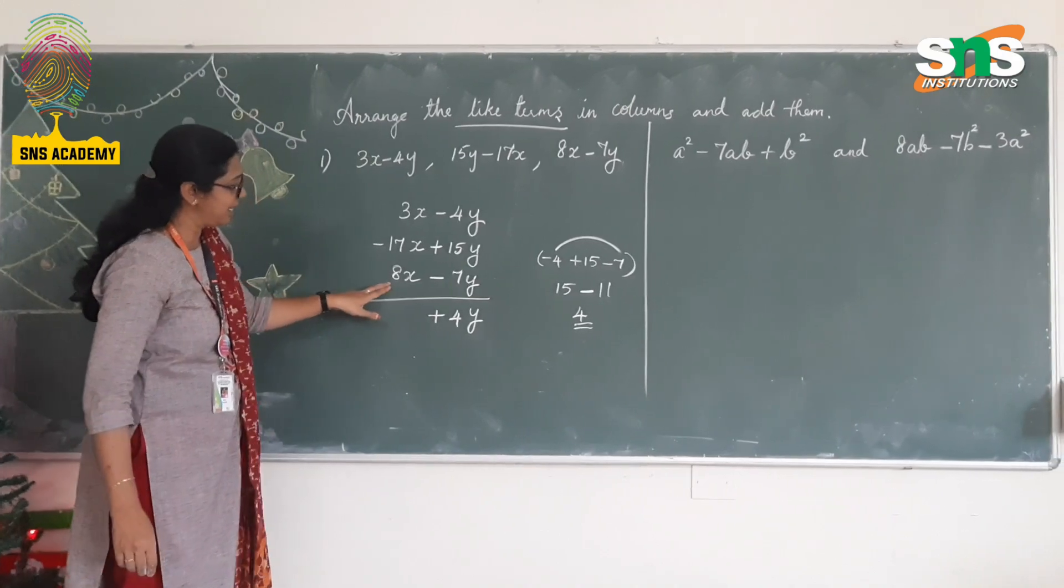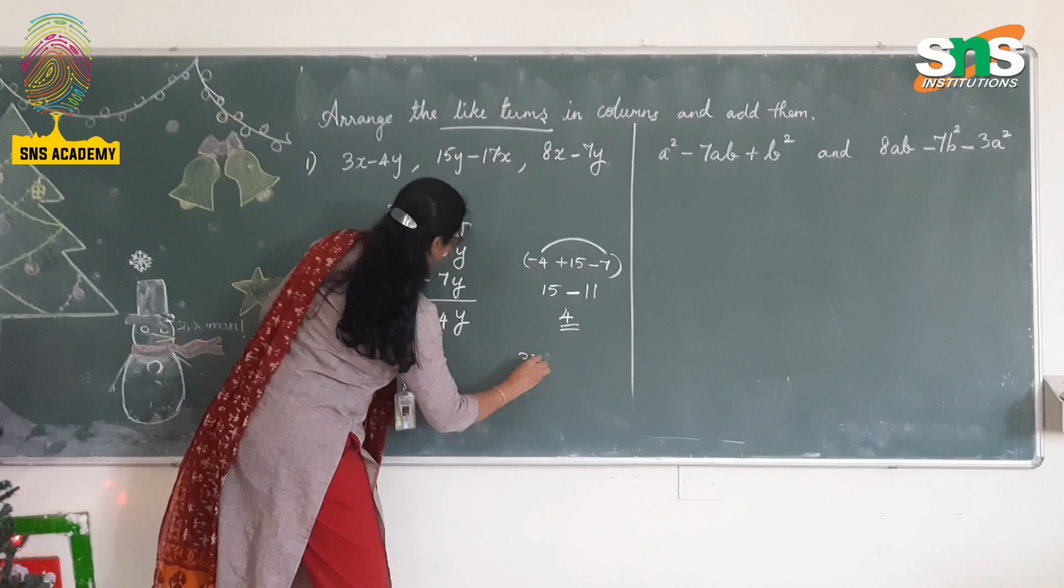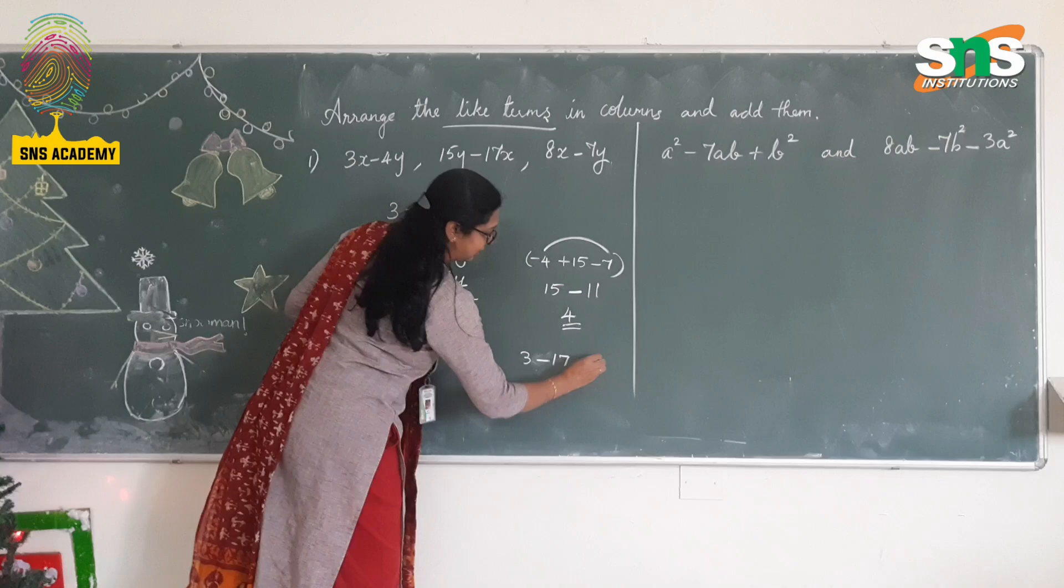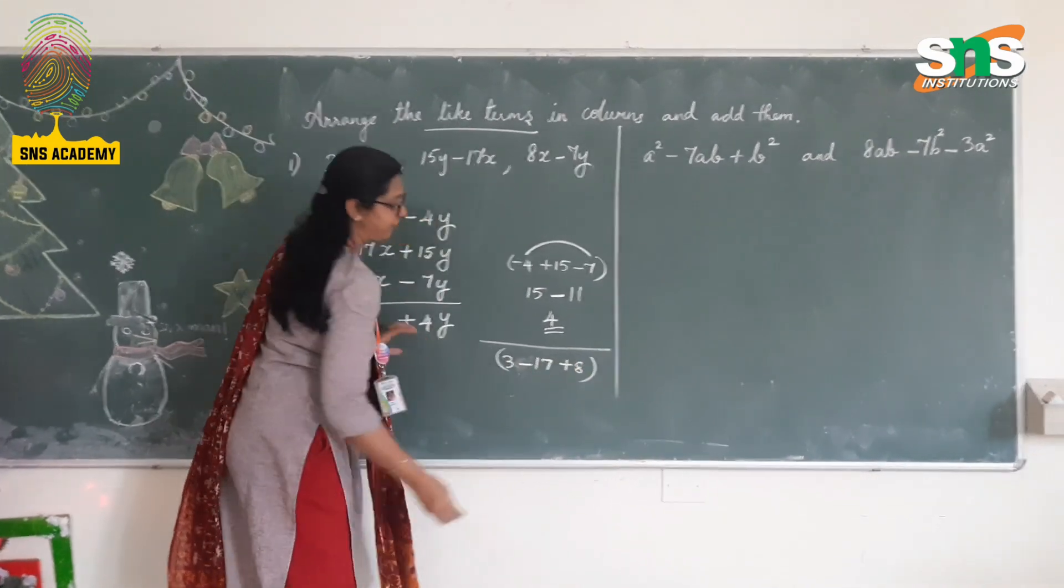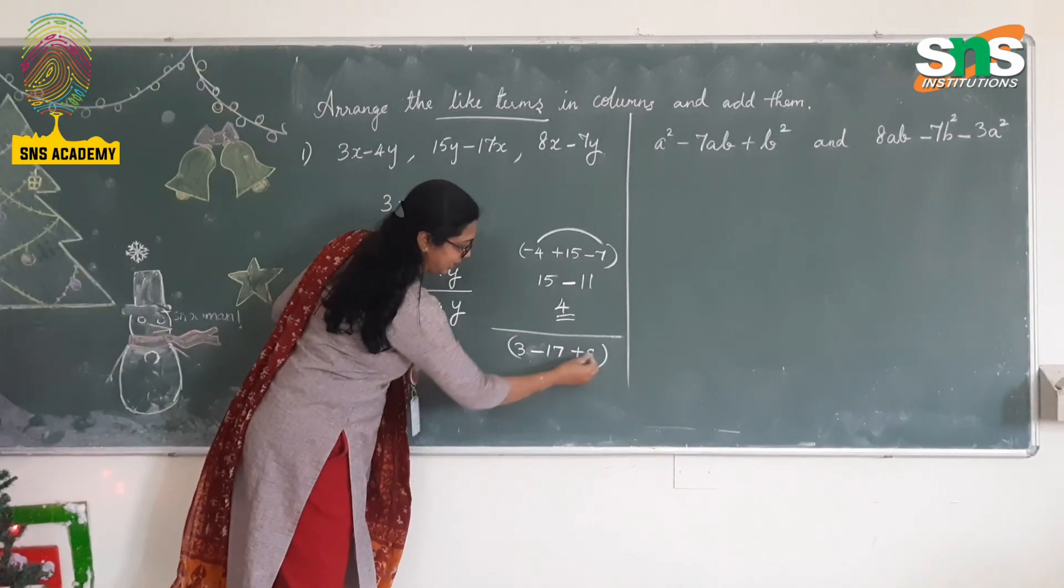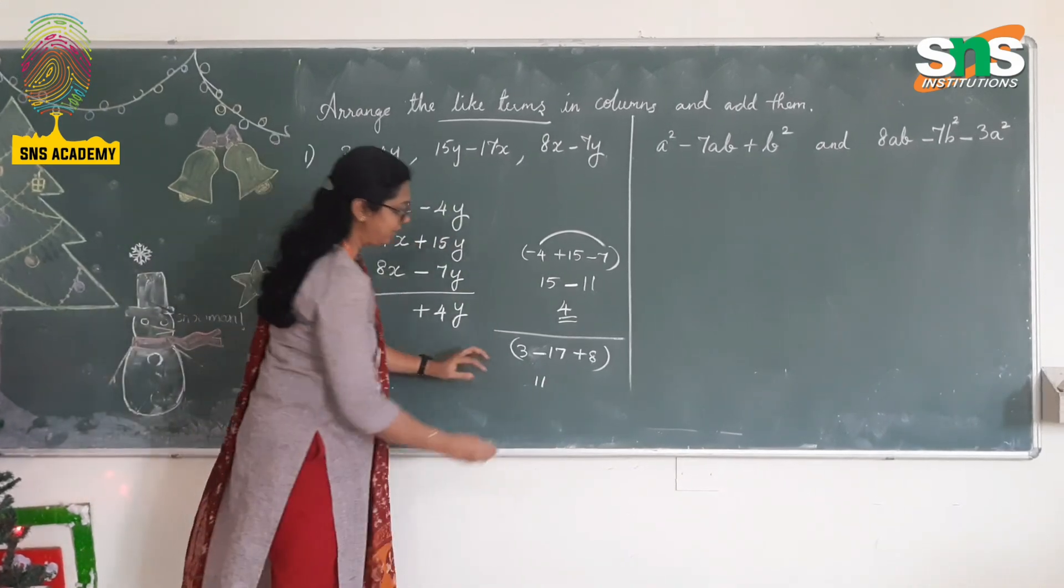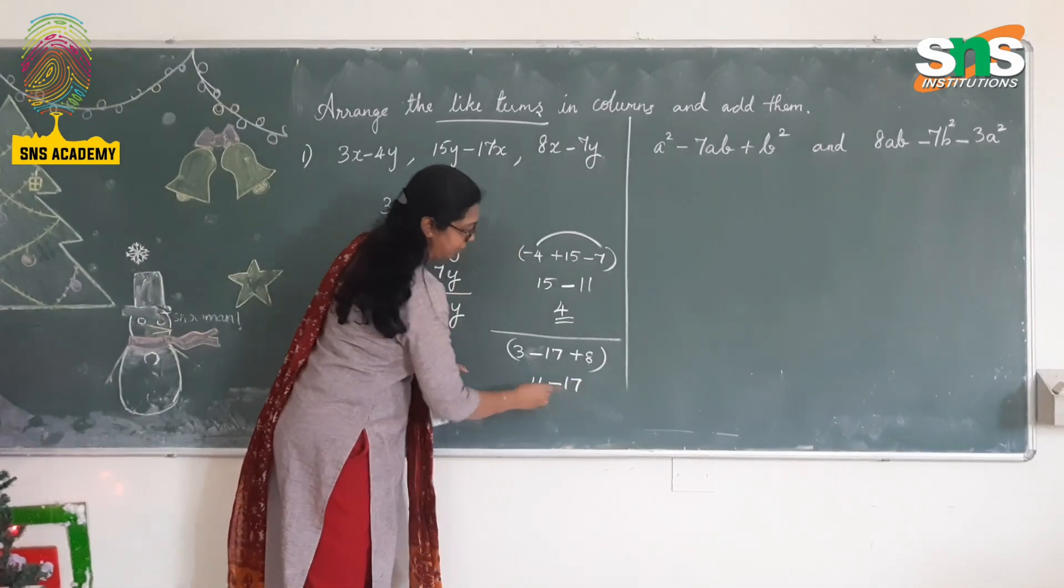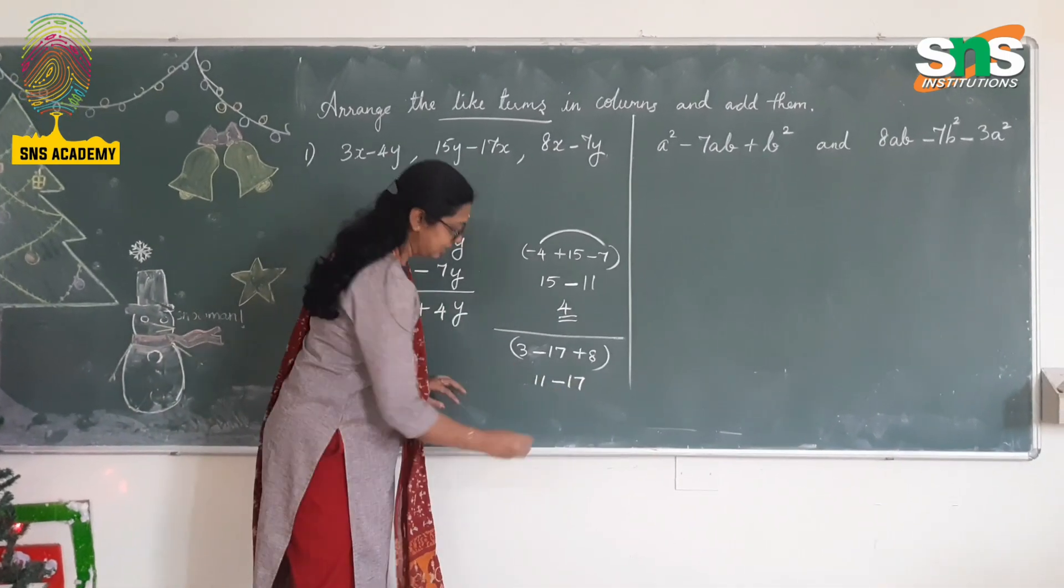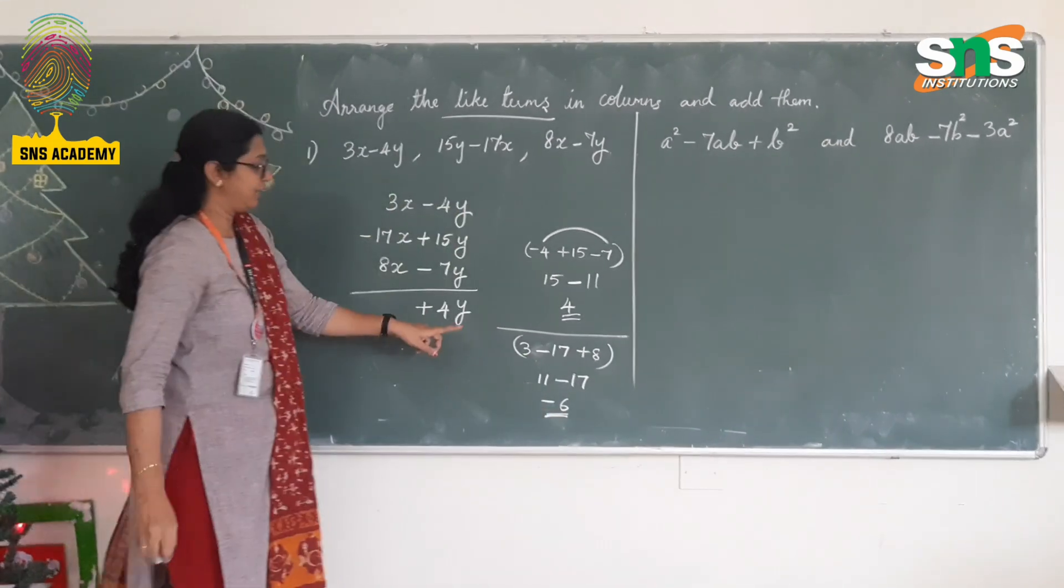So 17x + 8x. 3x, we'll write only the coefficients. So 3 - 17 + 8. As I already said, check for the signs of the coefficients. So here it is 3 and 8 are positive. I can write it as positive 11. So 3 + 8 is 11 - 17. Now, different signs, so subtract them to the greater: 17 - 11 is 6. Why are we subtracting 11? Because I am taking 6. So the sign is going to be negative 6. So negative 6x.